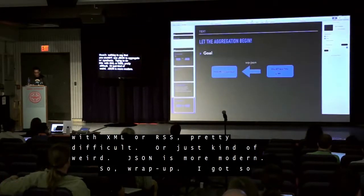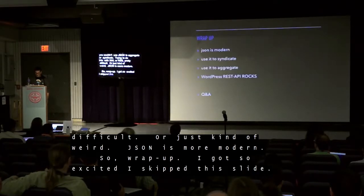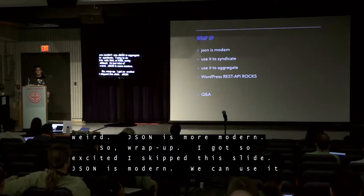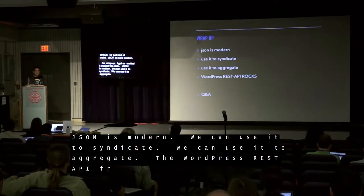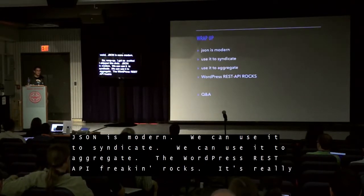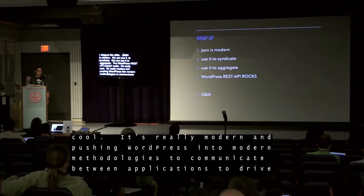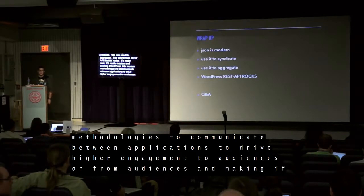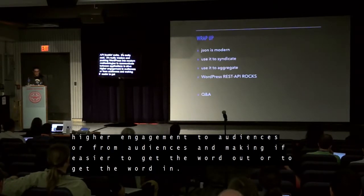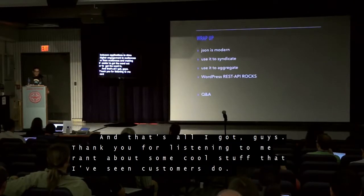Wrap up: JSON is modern. We can use it to syndicate. We can use it to aggregate. The WordPress REST API is really cool — it's modern, pushing WordPress into modern methodologies to communicate between applications, driving higher engagement to and from audiences, making it easier to get the word out or get the word in. Thank you for listening to me rant about some cool stuff I've seen customers do.